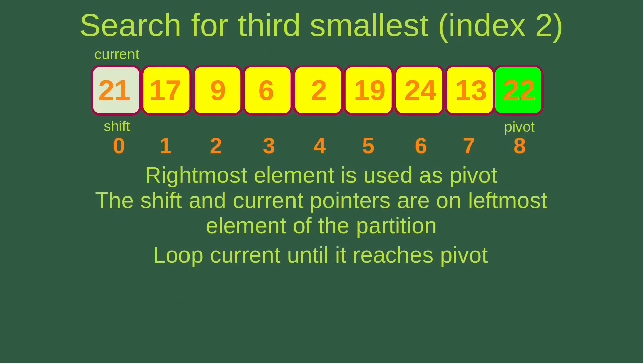Now let's take a look at an example. I want to find out the third smallest element in this unsorted array. The third smallest element corresponds to k equal to 2, meaning the index is 2. We choose the rightmost element as the pivot, shown in light green. We denote two indices: shift and current, both initially placed on the leftmost element of the array.